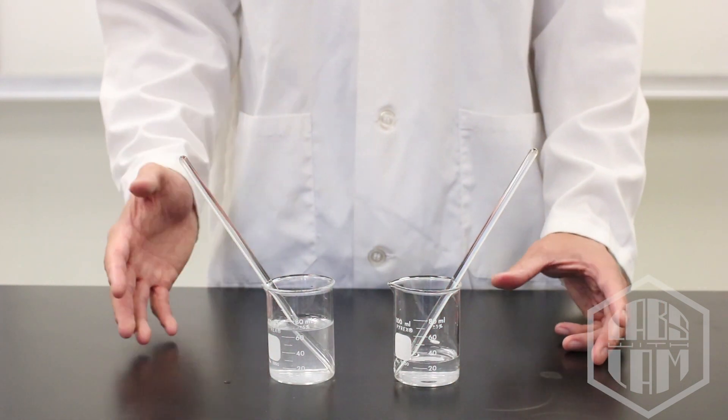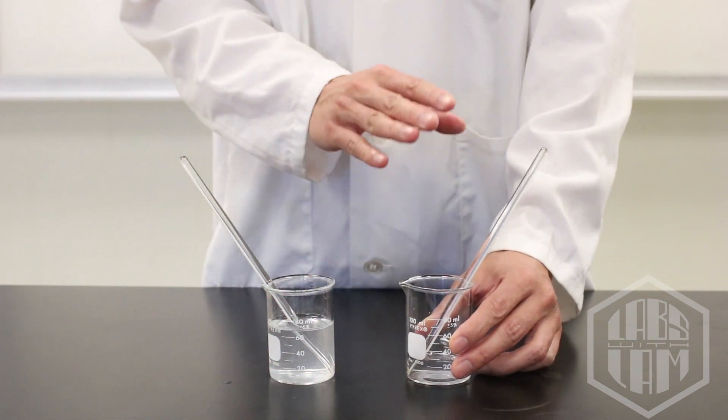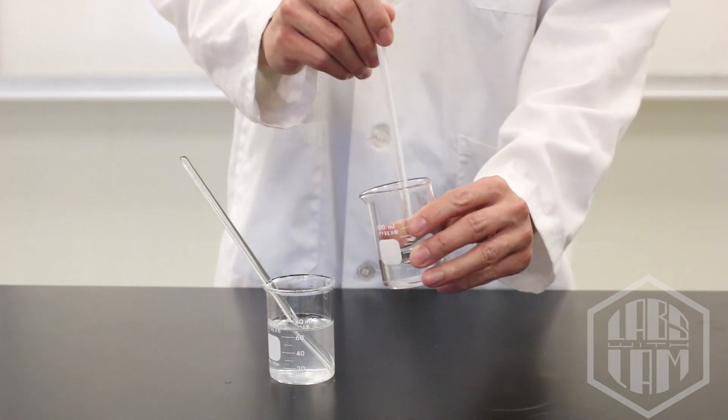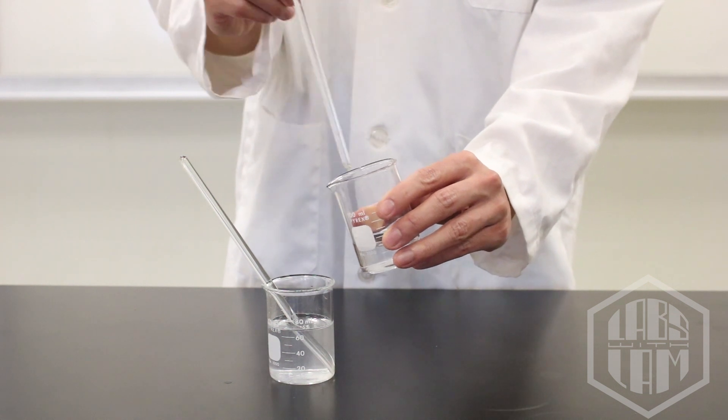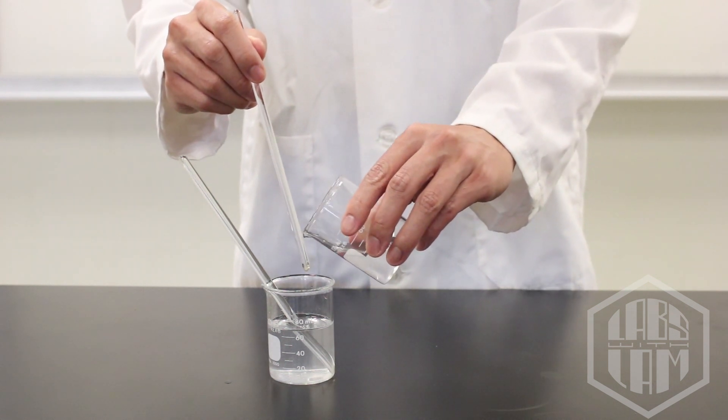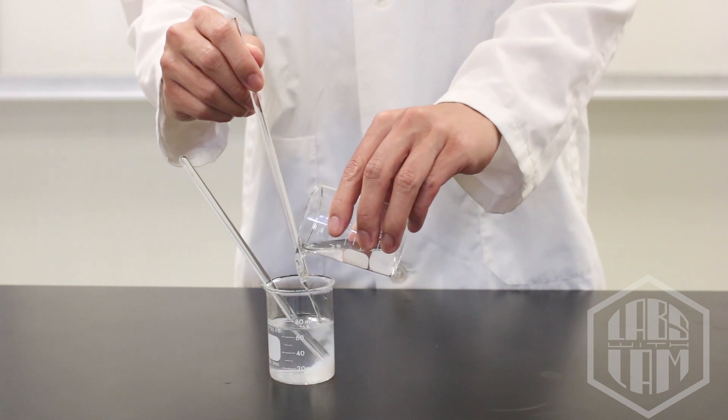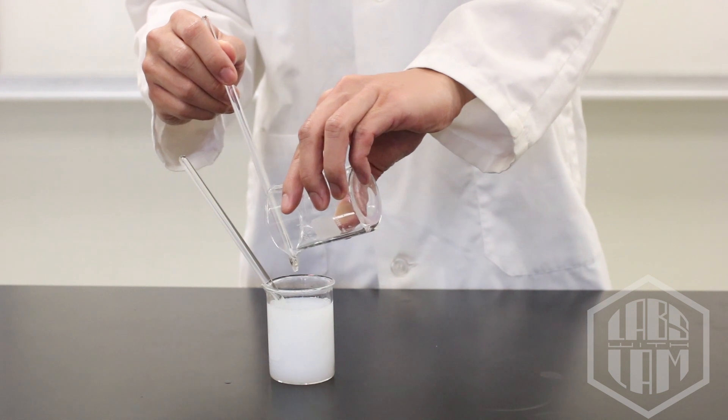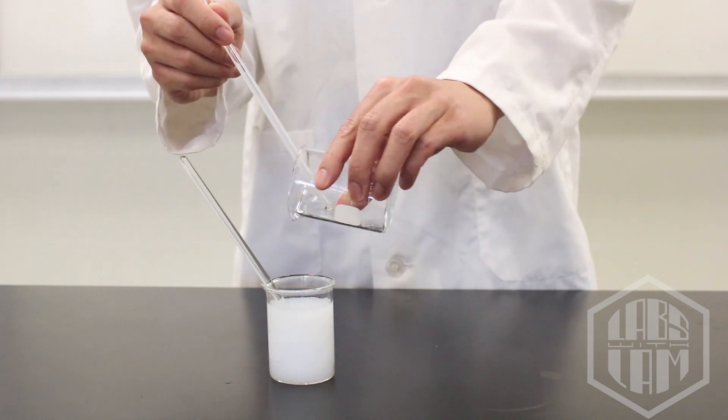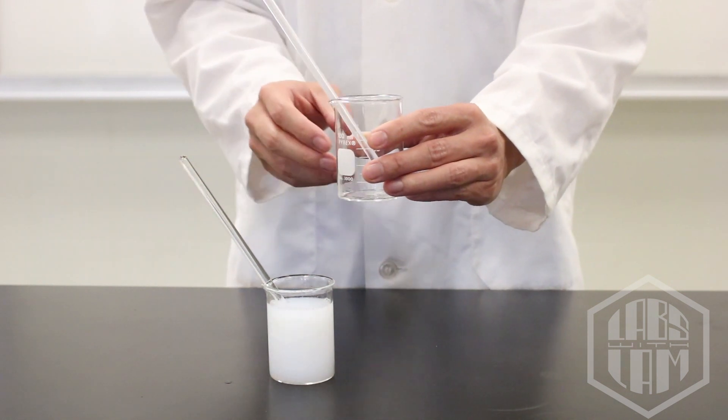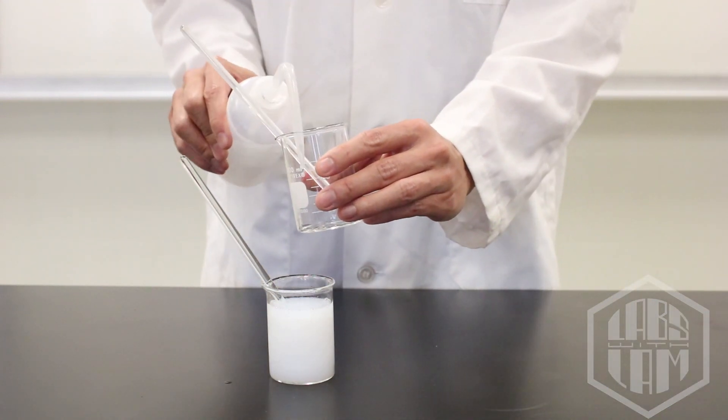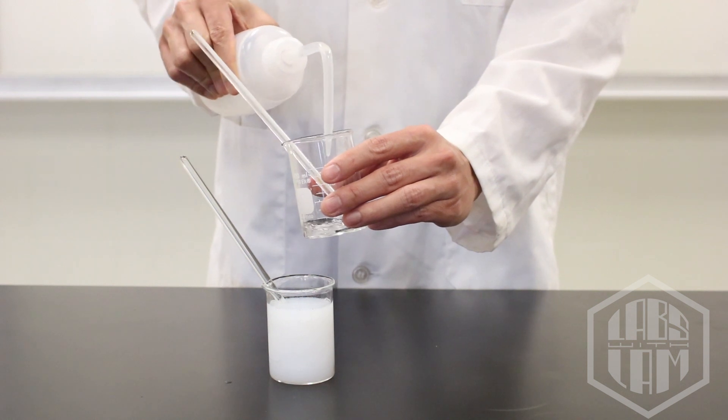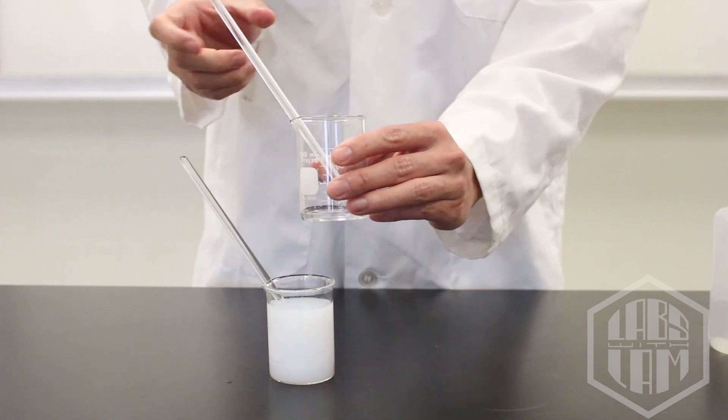Once both solutes are completely dissolved, I'm going to pour my calcium chloride solution into my sodium carbonate solution. Notice the way that I'm pouring it. I'm going to pour it against the stirring rod to minimize any spillage. I'm also going to add a bit more water to my calcium chloride beaker just to rinse it out along with the stirring rod and try to get all the calcium chloride into my reaction.